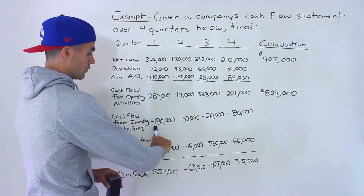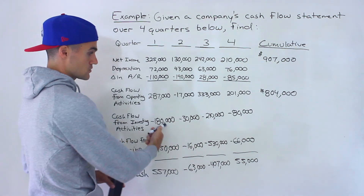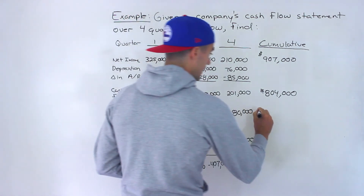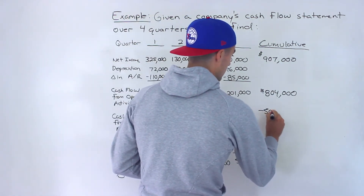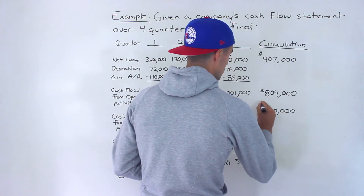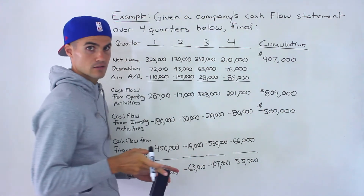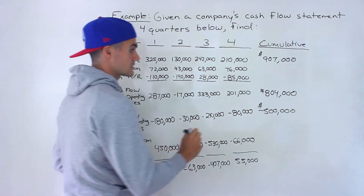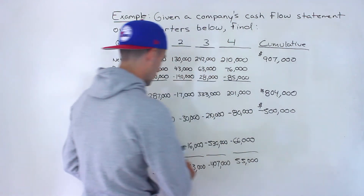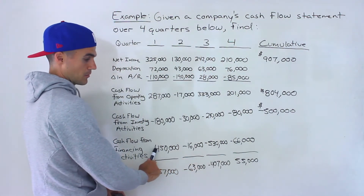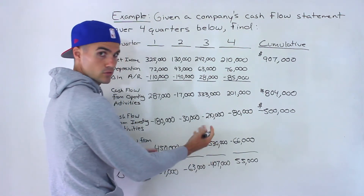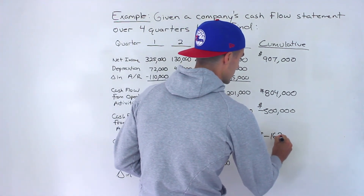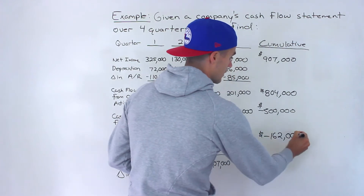If we add up all of the investing — the cash flow from investing activities — watch out for these negatives. Here we would end up with negative $500,000. That was the cash flow from investing activities over the entire year. And then if we add up all the financing activities, we would end up with — watch out for this positive here, so we've got a positive, negative, negative, negative — be very careful. You'd end up with negative $162,000.